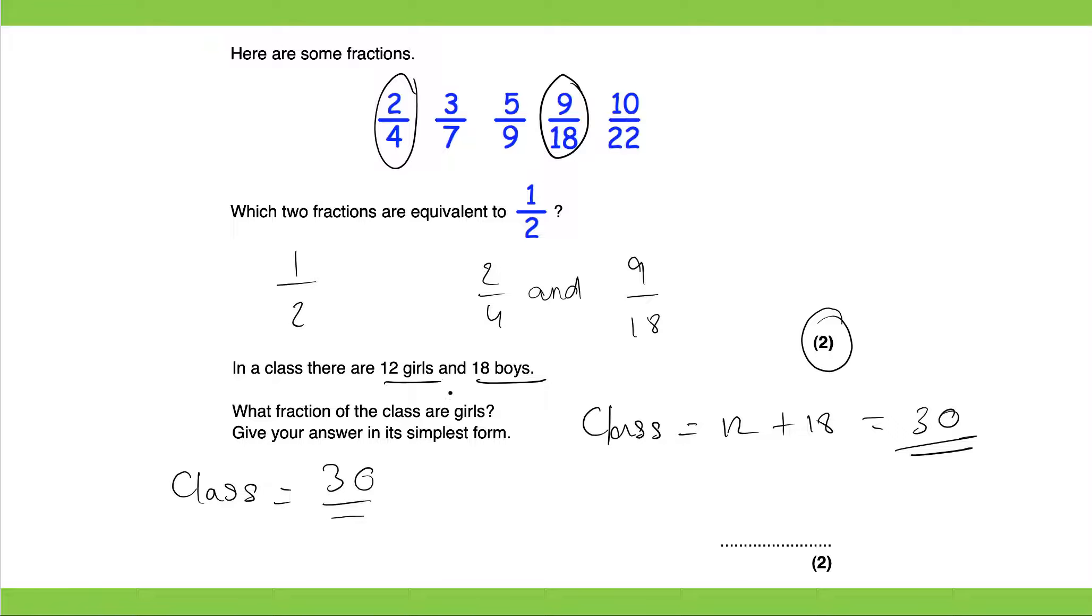So we know our class has 30 students. What fraction of the class are girls? So 12 are girls. So 12 out of 30 are girls. But we need to simplify our answer. Let's divide both sides by 2. That will get you six fifteenths.